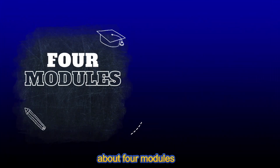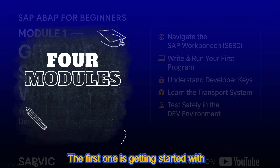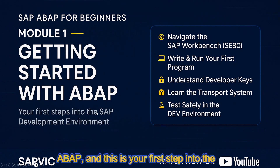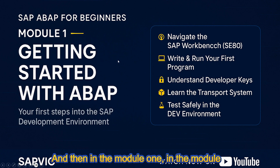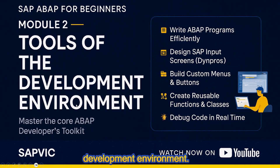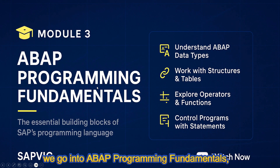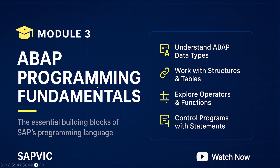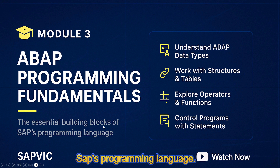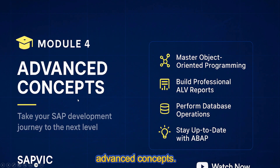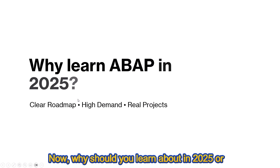We have about four modules in this roadmap. Module one is getting started with ABAP — your first step into ABAP development. Module two covers the tools of the development environment, where you master the core ABAP developer's toolkit. Module three goes into ABAP programming fundamentals, the essential building blocks of SAP's programming language. Module four covers advanced concepts.